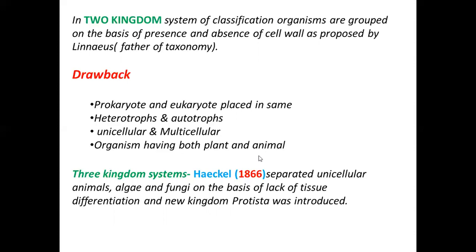The drawbacks of the two-kingdom classification: there was no difference between prokaryotic and eukaryotic. There was nothing about heterotrophs and autotrophs. There was no information about unicellular and multicellular organisms. Also, for Euglena, which has both plant-like and animal-like characteristics — it is autotrophic but lacks a cell wall like animals — there was no classification for them.